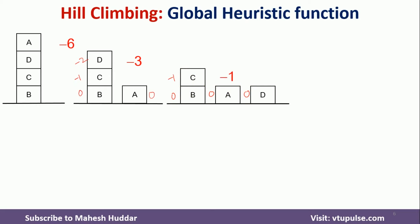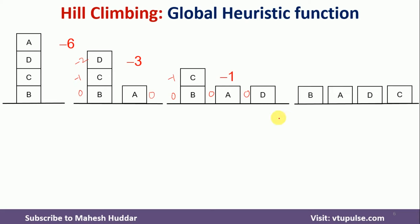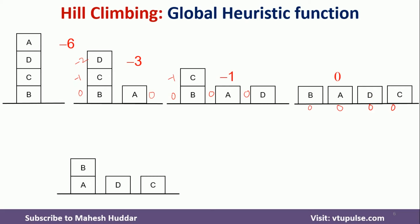Now I move C to the ground. Below A, below B, and below the other blocks, all values come to zero. So the total value of this state is zero — better than the previous one, so I continue from here. Next, I put B on top of A. Below A, nothing is there, so zero. Below B, one correctly placed block. The total value of this state is one.